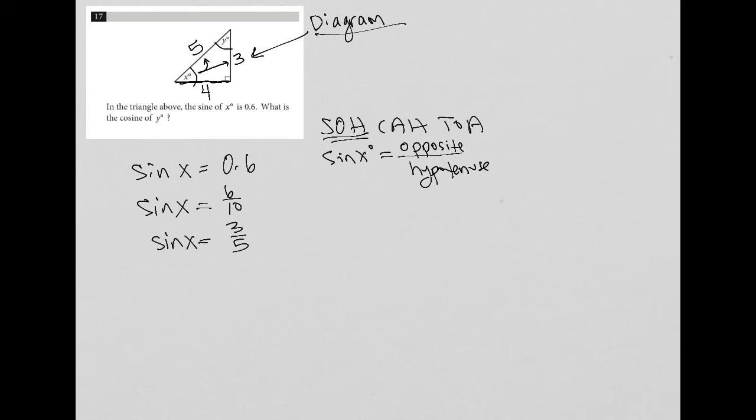Either way, even if we use Pythagorean theorem, which for what we have, we just say 3 squared plus, let's call it b squared, let's call this side b, equals 5 squared. If you do the math there, you'll find that b is equal to 4.